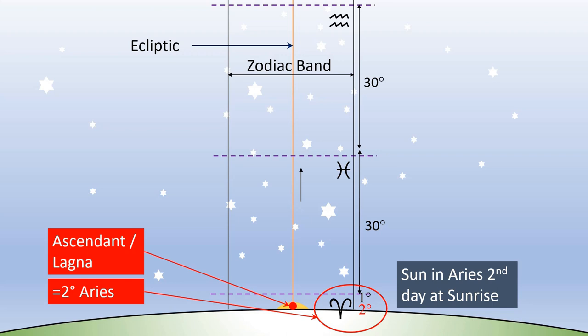So we have learned two things: one, lagna of a person depends not only on the time of birth but also on the place of birth, as every place on Earth will be facing a different sign at different times on the eastern horizon; and two, if the person is born at the sunrise time, then his lagna is the same sign in which the Sun is currently placed, and the degrees of the ascendant are equal to the degrees traversed by the Sun in that sign.